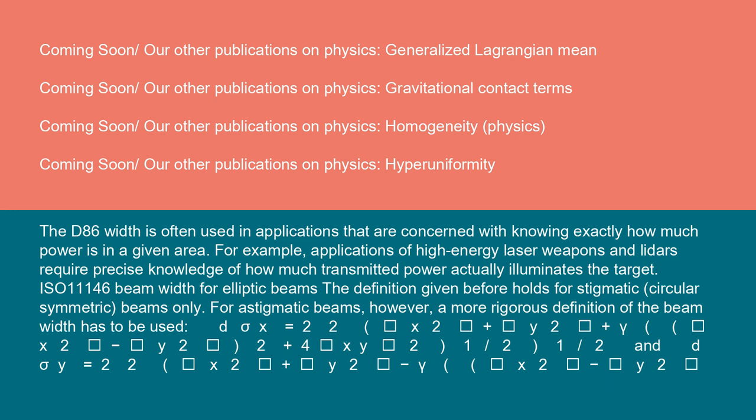ISO 11146 beam width for elliptic beams: The definition given before holds for stigmatic, circular symmetric beams only. For astigmatic beams, however, a more rigorous definition of the beam width has to be used. D_σx = 2√2[√(⟨x²⟩ + ⟨y²⟩ + γ√((⟨x²⟩ - ⟨y²⟩)² + 4⟨xy⟩²))]^(1/2)